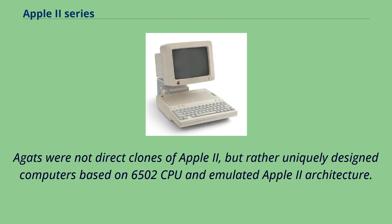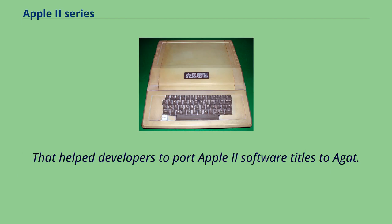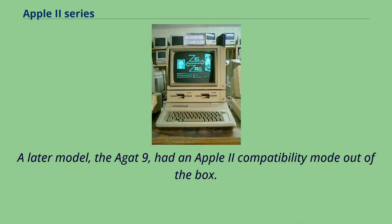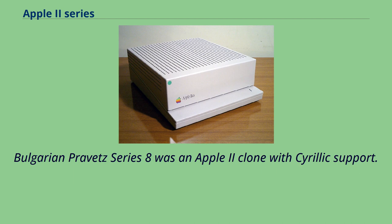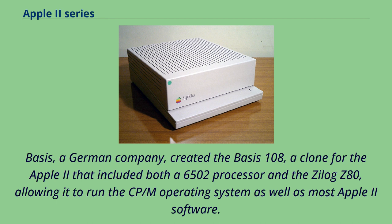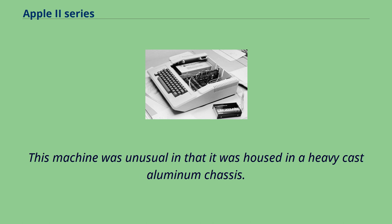That helped developers port Apple II software to Agat. A later model, the Agat 9, had an Apple II compatibility mode out of the box. Soviet engineers developed thousands of software titles for Agat, including system software, business applications, and educational software. The Bulgarian Pravets Series 8 was an Apple II clone with Cyrillic support. Basis, a German company, created the Basis 108, a clone that included both a 6502 processor and the Zilog Z80, allowing it to run the CP/M operating system as well as most Apple II software, housed in a heavy cast aluminum chassis, equipped with built-in Centronics and RS-232C ports, as well as the standard 6 Apple II-compatible slots.